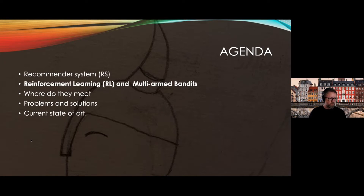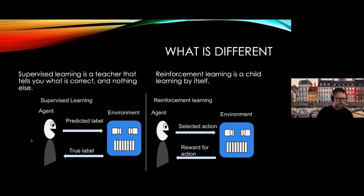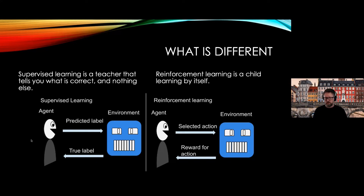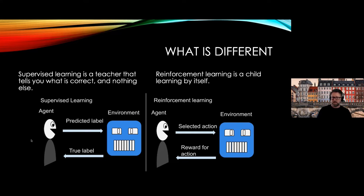That was recommender systems. Now let's move on to reinforcement learning and multi-armed bandits. Everybody knows supervised learning — a model predicts labels and gets the true label back as feedback. Reinforcement learning is more like a child learning by itself. You're in an environment, you select an action, and then the environment rewards that action — rewards can also be negative. If a child lights something on fire, that negative reward is still considered a reward.